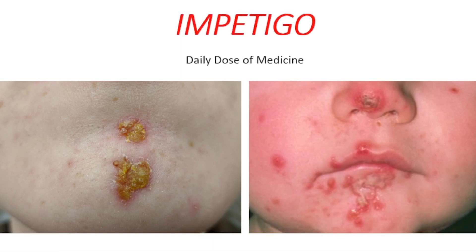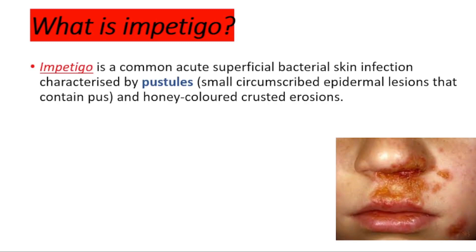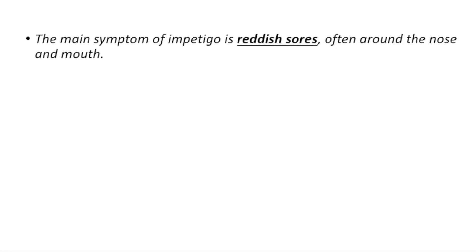In today's video we will be talking about impetigo. What is impetigo? Impetigo is a common acute superficial bacterial skin infection characterized by pustules, which are small circumscribed epidermal lesions that contain pus, and honey-colored crusted erosions, which you can see in the picture.